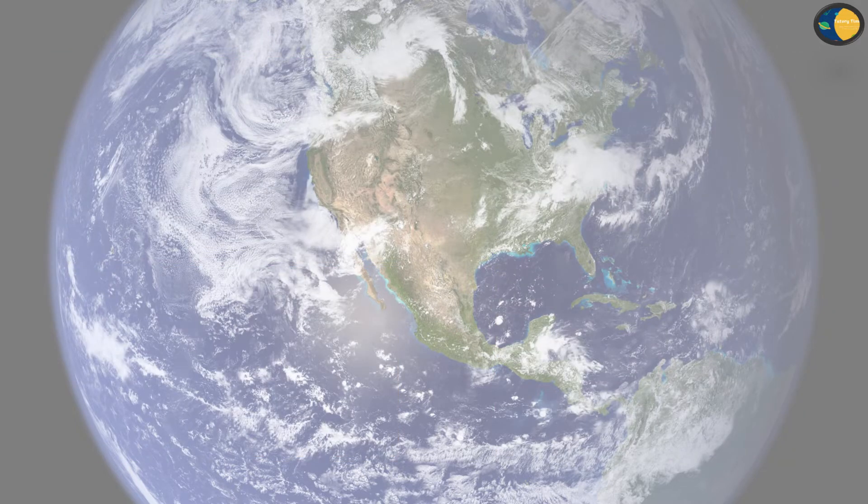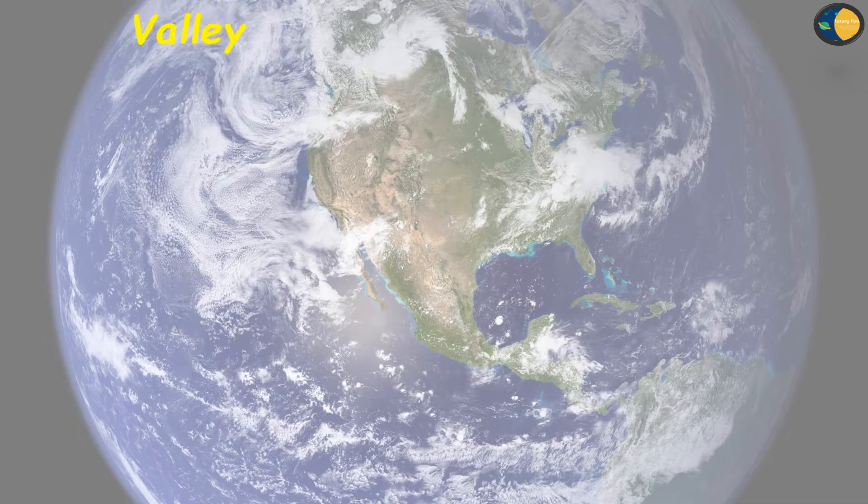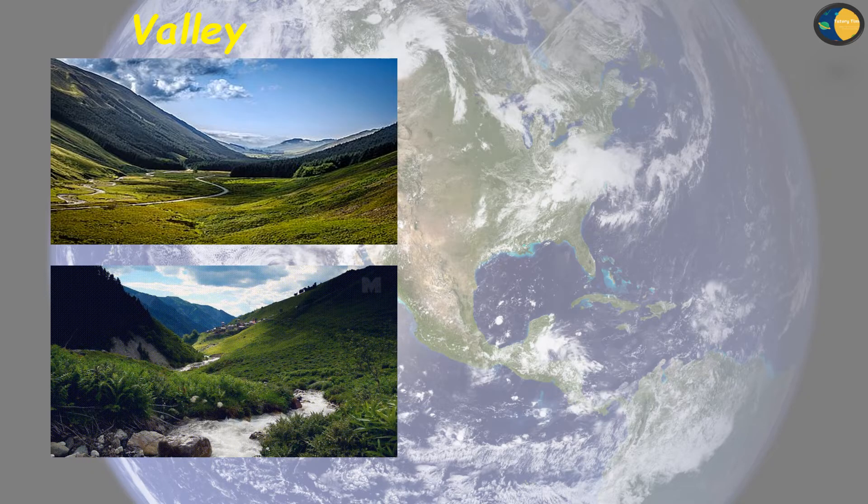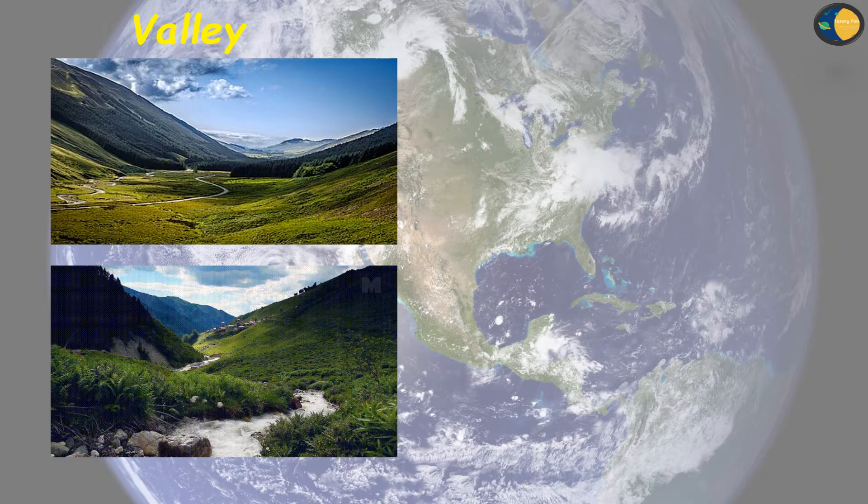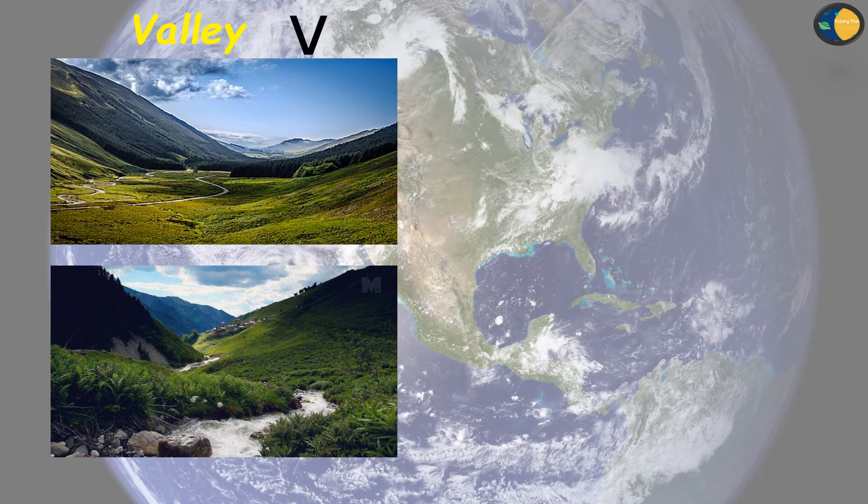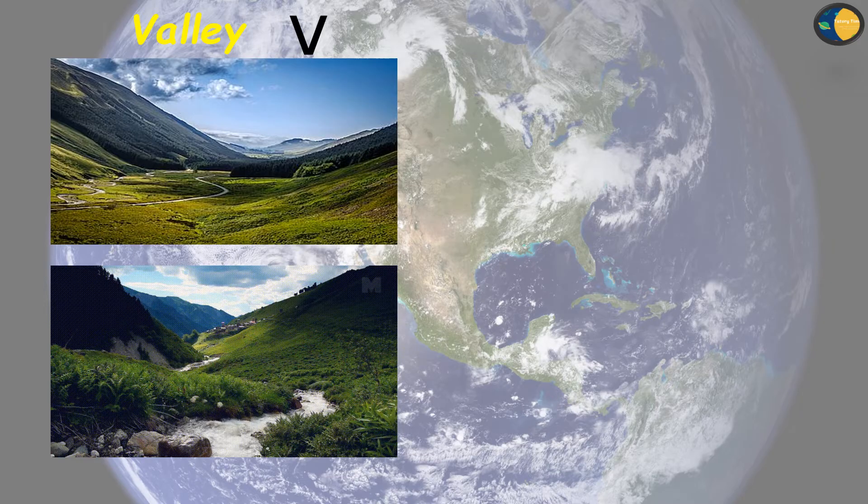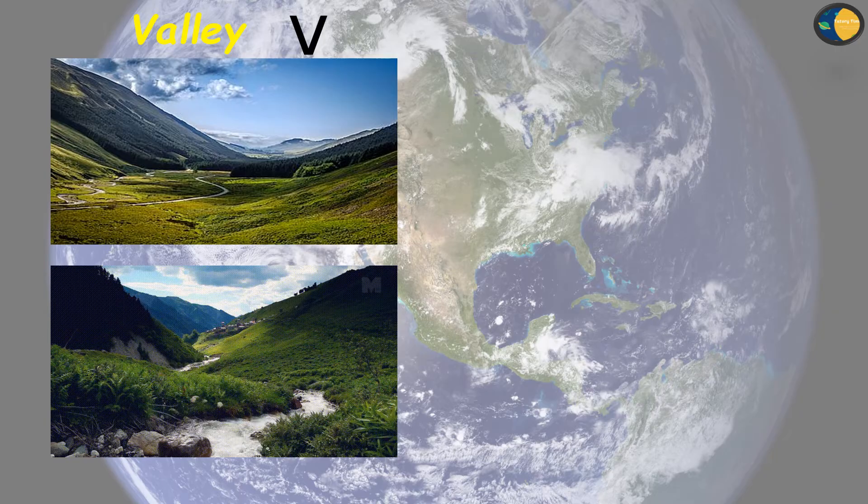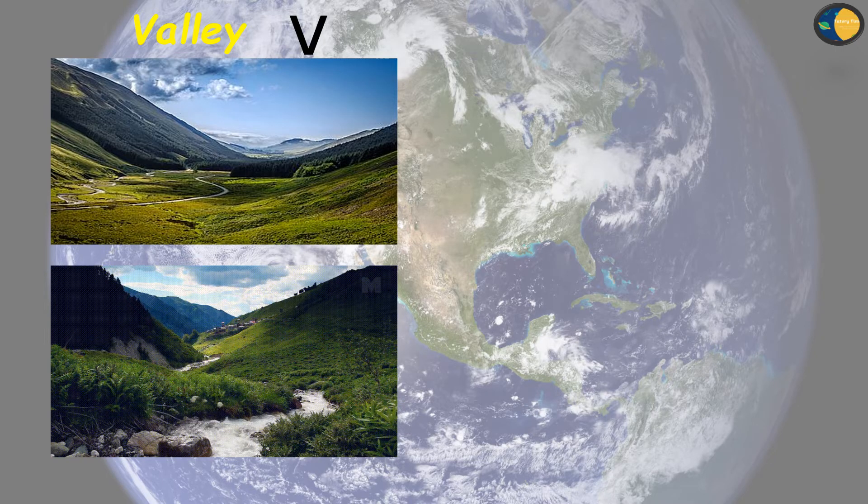Next is valley. A low land between hills or mountains is called a valley. There are thick forests in the valleys. The shape of a valley is like a letter V. Usually rivers flow through a valley. And the land of a valley is very good for growing crops.